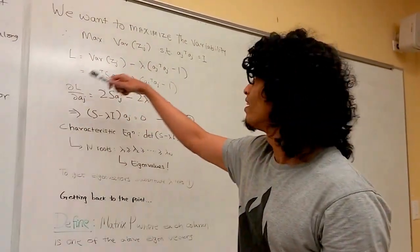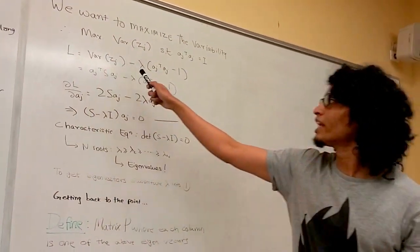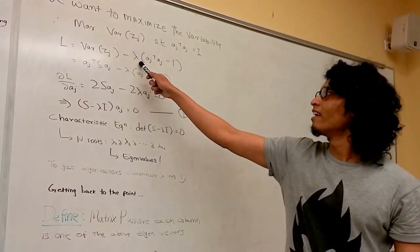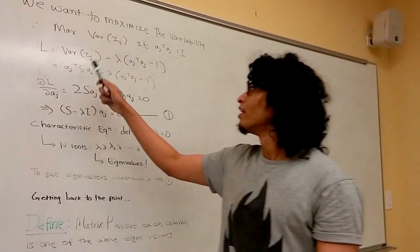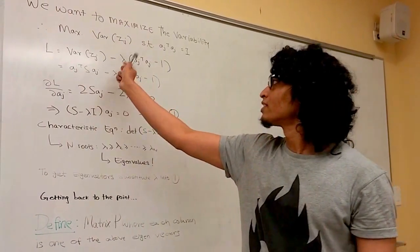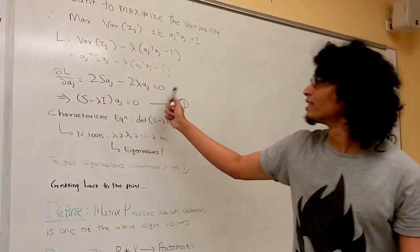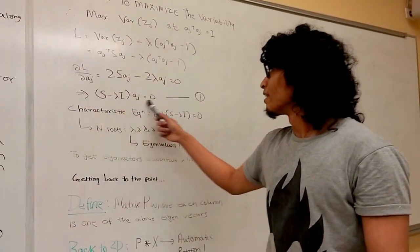You define a function L, which is the variability of z of j, minus some scalar lambda times our constraint. You take the derivative of this with respect to a of j, set that to zero. Eventually, you end up with this.